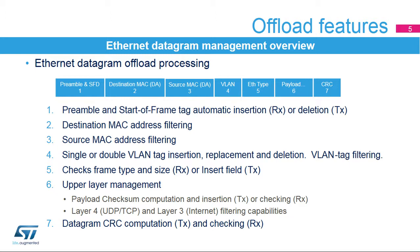The payload is composed of data from transport or Internet layers. The peripheral can filter received frames depending on either port or IP addresses. The checksum is computed or checked for IPv4 headers and the TCP/UDP or ICMP payload. Finally, the CRC is computed for the whole datagram without taking into account the preamble and the start-of-frame tag.